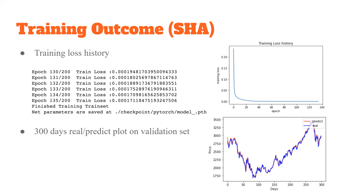For the training part, we use four different datasets to train the stacked attention LSTM models. We then use validation sets to tune the parameters. The figures on the slide show an example of training and validation results on the SHA dataset. To avoid overfitting, we set the dropout rate to 0.2, and we stop training when the training loss is small enough. The model stopped training after 135 epochs. From the bottom plot, we can see the predicted price is very close to the real price.